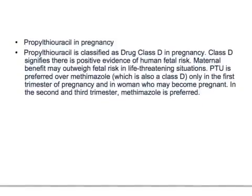Regarding propylthiouracil in pregnancy, it belongs to pregnancy class D, which signifies there is positive evidence of human fetal risk, but maternal benefits may outweigh fetal risk in life-threatening situations. PTU is preferred over methimazole only in the first trimester of pregnancy and in women who may become pregnant. In the second and third trimester, methimazole is preferred.